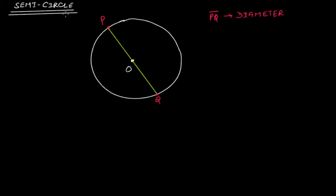But we want to take this particular diameter PQ in order to explain what a semicircle is. PQ is a diameter, and this portion of the circle formed between the two endpoints of this diameter — that portion is a semicircle. Semicircle means half of the circle.